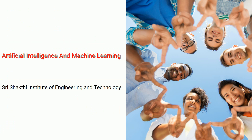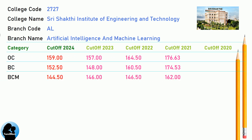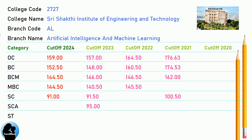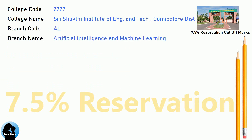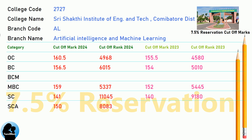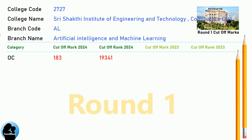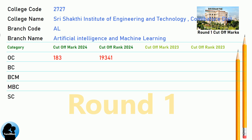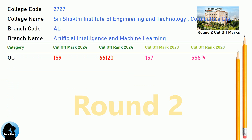DNA Cut-Off for Shri Shakti Institute of Engineering and Technology in Artificial Intelligence and Engineering. DNA 7.5 Reservation Cut-Off for Shri Shakti Institute of Engineering and Technology in Artificial Intelligence and Machine Learning. DNA Round 1 Cut-Off and Round 2 Cut-Off for Shri Shakti Institute of Engineering and Technology in Artificial Intelligence and Machine Learning.